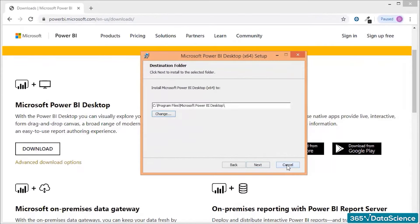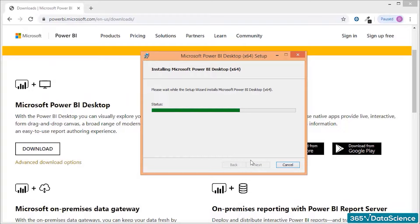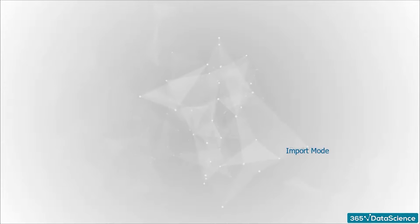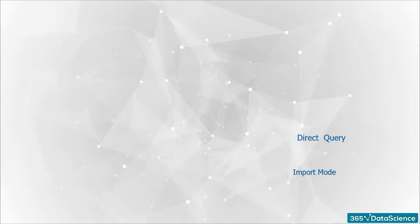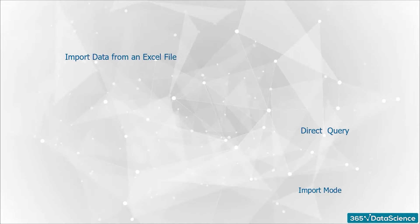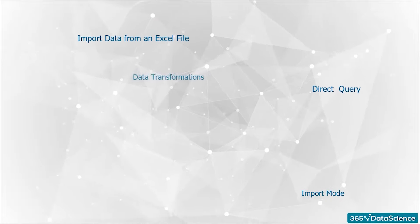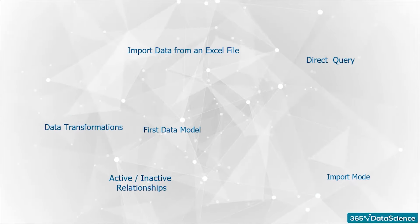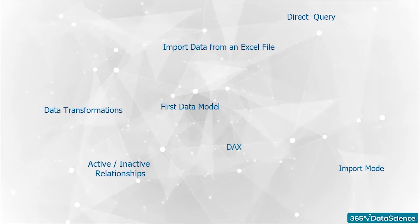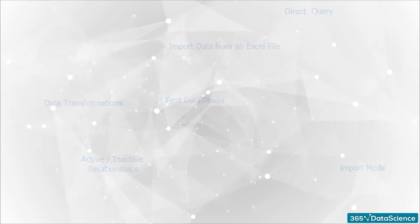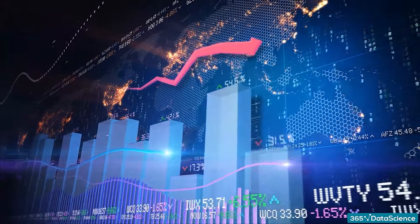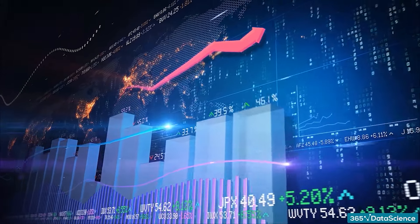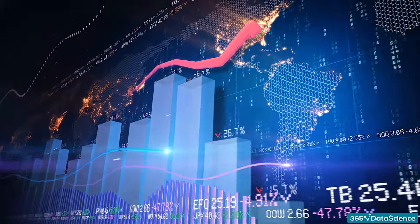Welcome to section three. In our previous lesson, we saw how to install Power BI on our local machine. In this section, we're going to investigate the Query Editor, talk about import mode and DirectQuery, and see how the two differ. We're going to see how to import data from an Excel file and launch Power Query, make some data transformations, build our first data model, and discuss active versus inactive relationships. We'll also teach you how to enter data inside Power BI using DAX code, talk about hierarchies, and investigate what Q&A does in Power BI — how we can ask real questions to our data and get real answers in the form of lines and charts.